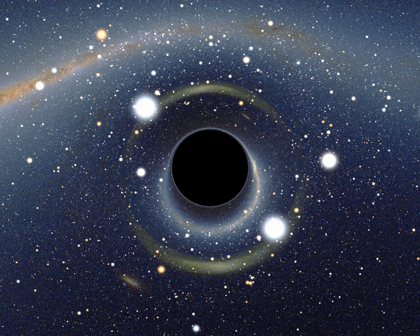Sagittarius A*, the black hole at the center of our Milky Way galaxy, is 4.3 million solar masses. If fuzzball theory is correct, it has a mean density that is 51 times that of gold.